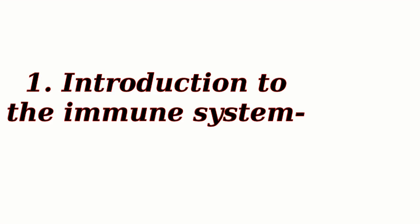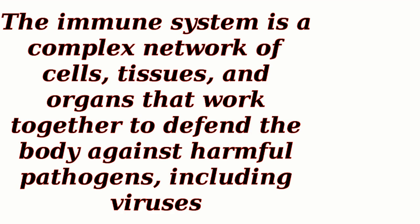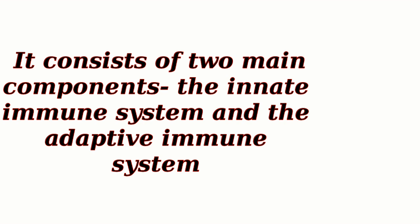Introduction to the immune system. The immune system is a complex network of cells, tissues, and organs that work together to defend the body against harmful pathogens, including viruses. It consists of two main components: the innate immune system and the adaptive immune system.